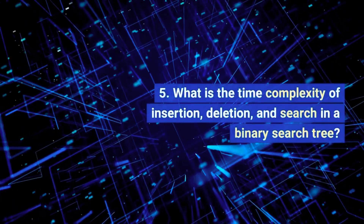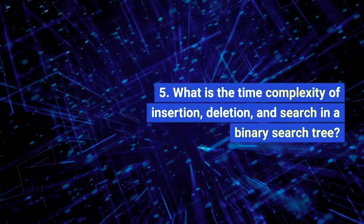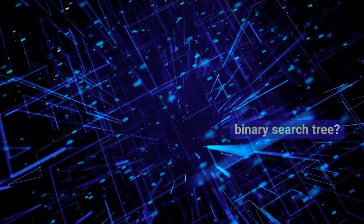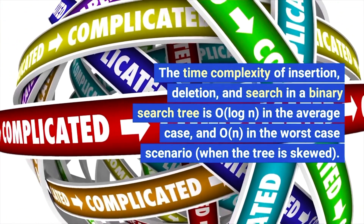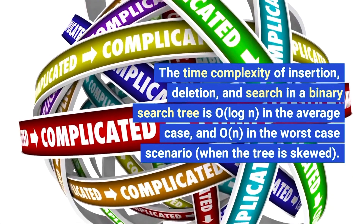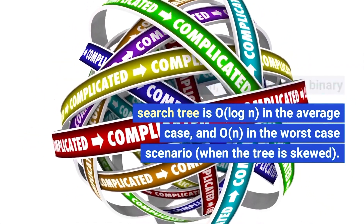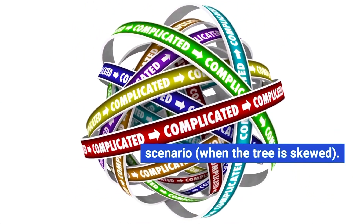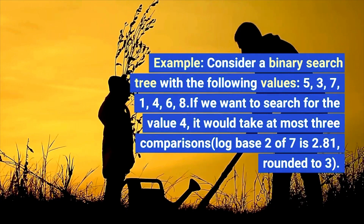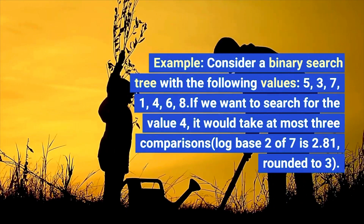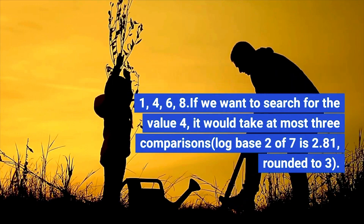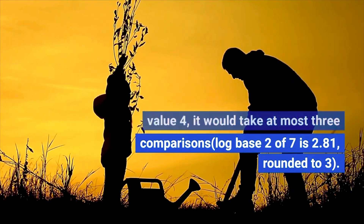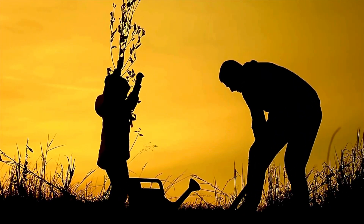Fifth question: explain the time complexity of insertion, deletion, and search in a binary search tree. The time complexity is O(log N) in the average case and O(N) in the worst case scenario. For example, consider a binary search tree with values 5, 3, 7, 1, 4, 6, 8 — searching for the number 4 would take at most three comparisons.